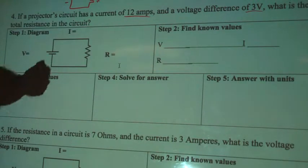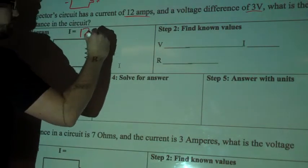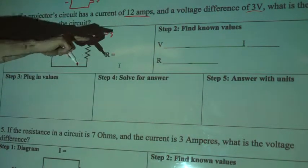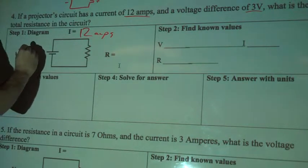Alright, so let's plug it in. So our current is 12 amps. Okay, resistance, so voltage difference. I don't know the resistance, but I do know the voltage difference is 3 volts.